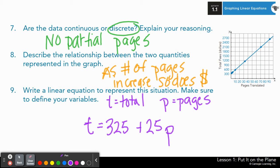Number eight, you could have noticed or described it a different way, but I simply said, as the number of pages increase, so does the total cost. I shorthanded using symbols, but if you can explain it, I mean, if you can understand it that way, you can also put the symbols as well. And for number nine, t represents the total, p represents pages. So the linear equation I created was t total is equal to 325 plus 25p. Take a couple seconds to get that if you don't have it.